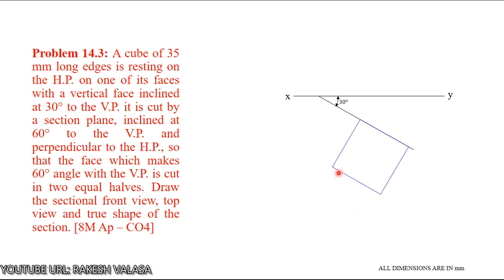When we are seeing from the top side, the top face is visible and the bottom face is invisible. I have taken the bottom face as A, B, C, D and the top face as 1, 2, 3, 4. One point is visible, A point is invisible. Similarly, two of B, three of C, four of D. This is the initial top view.